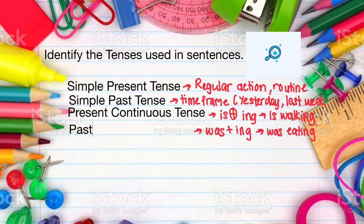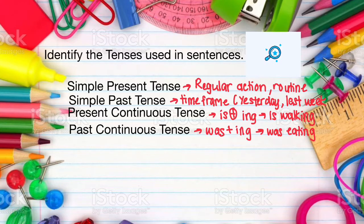And the fourth, past continuous tense, which uses a verb to be in past tense form plus -ing. For example, was eating.